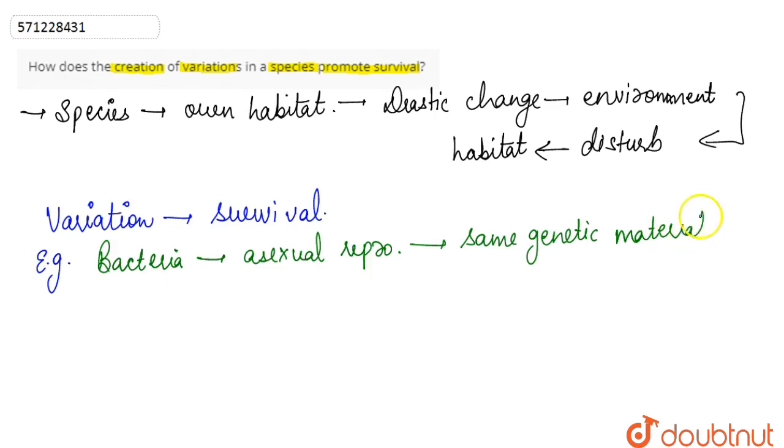If all the bacterial species do not have any variation, as they all have the same genetic material, if there is any natural calamity or condition that is not favorable for all those bacterial species, then because there is no variation among them...